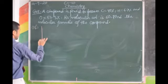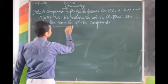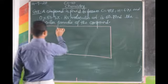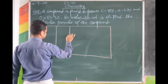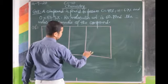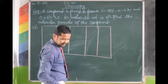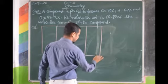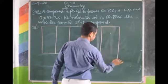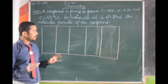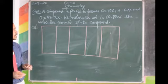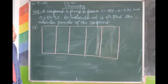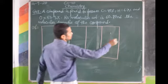First, make a table with five columns: one for element, one for percentage composition, one for atomic weight, one for number/ratio of atoms, and one for simplest ratio.